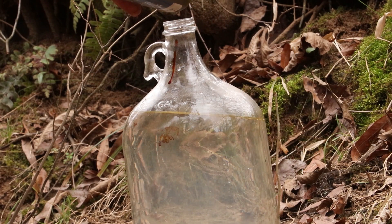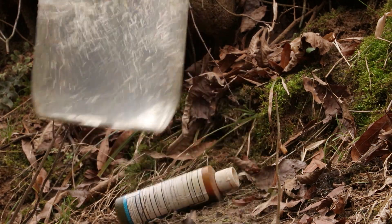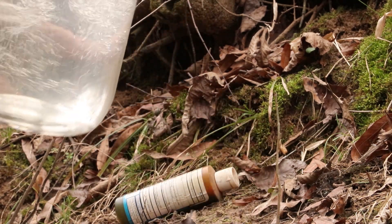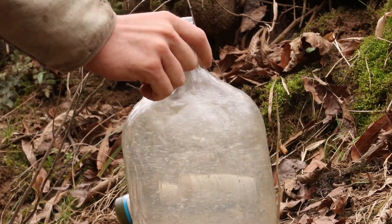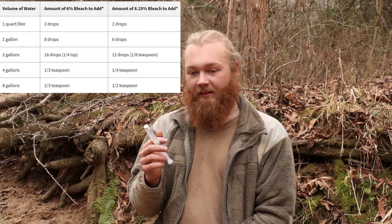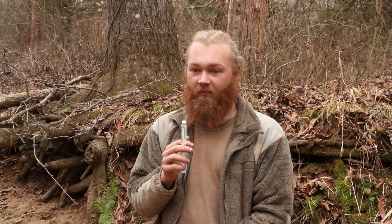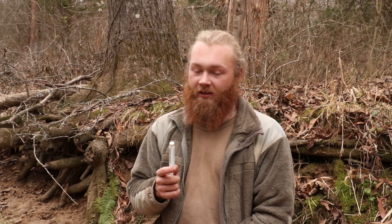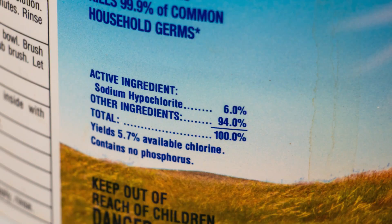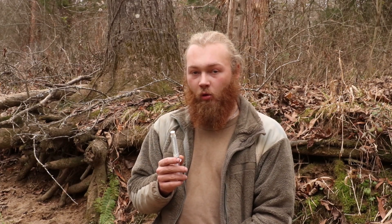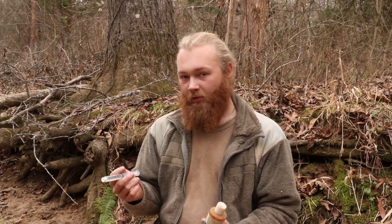Bleach, on the other hand, is similar except you don't need to use quite as much. You can use 2 to 3 drops per liter of water and around 8 per gallon. The quantity of bleach is going to vary a little bit — if you look on the label, it'll tell you what the percentage of sodium hypochlorite is. More sodium hypochlorite, you're going to use less; less sodium hypochlorite, you're going to use more. It's pretty simple, and it's only like a drop or two's difference.